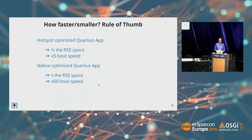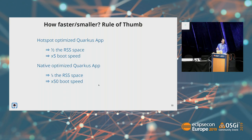As a very rough rule of thumb, when you Quarkify a Java application, you are expected to see a memory reduction to about half. So if it used to take one gigabyte with the standard popular ways you write Java today, you reduce down to half a gig. And boot time will go about five times faster. And when you go native, things are even more interesting — memory consumption falls about five times, and boot time can increase by 50 times or even 100 times, depending on your app. Those are very impressive savings.